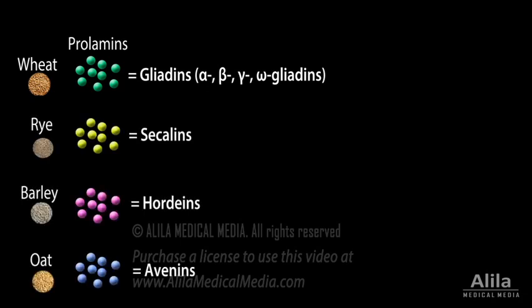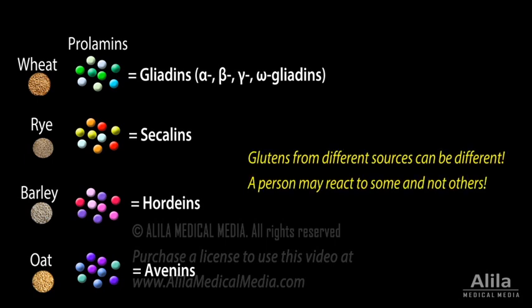These proteins are highly polymorphic, meaning there exist many variations of the same protein. Thus, not only different grains, but also different varieties or even different genotypes of the same grain can produce different gluten compounds.